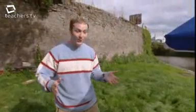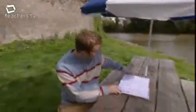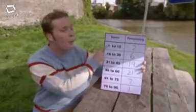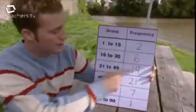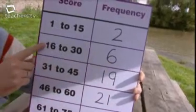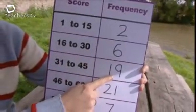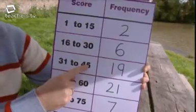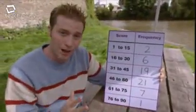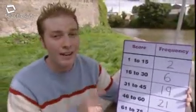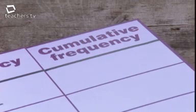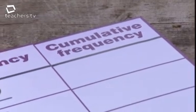It's time to get my hands on the numbers after the last of the competitors bites the dust. 56 people competed, so the scores on the boards look like this. The number of people who scored from 1 to 15 is 2. 6 people scored from 16 to 30. 19 people scored from 31 to 45, and so on. But this programme is about cumulative frequency, which means I need to add another column to my table. Cumulative frequency is like the running total — you add up the frequencies as you go along and get the total so far.